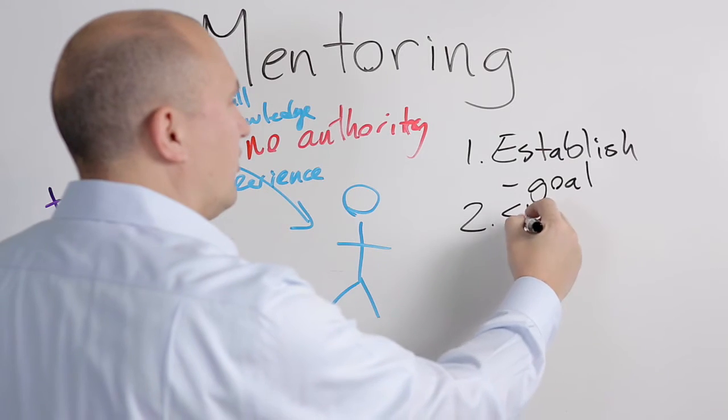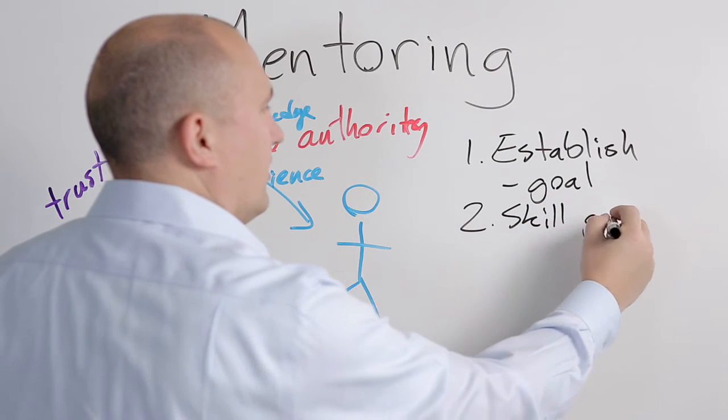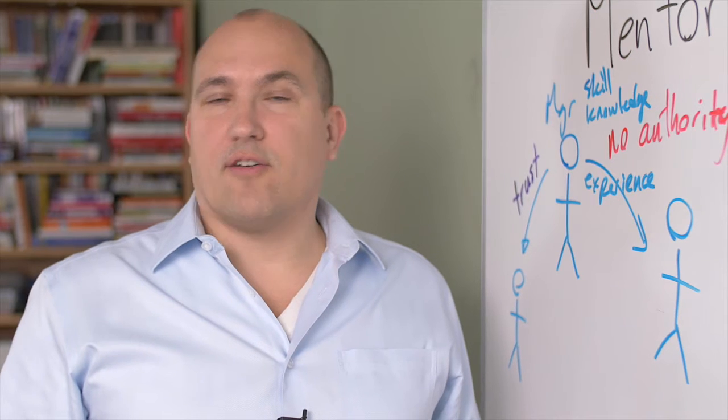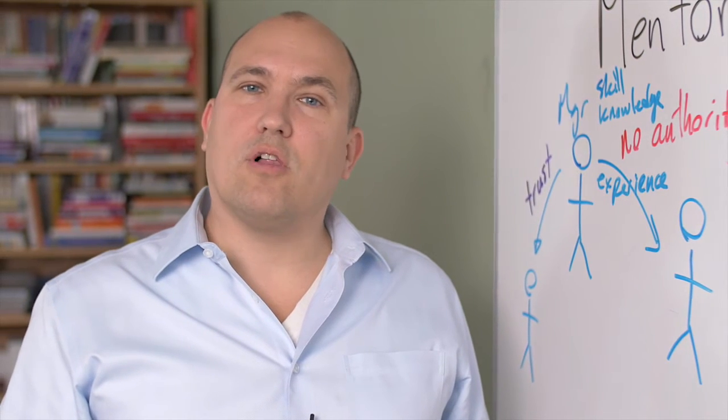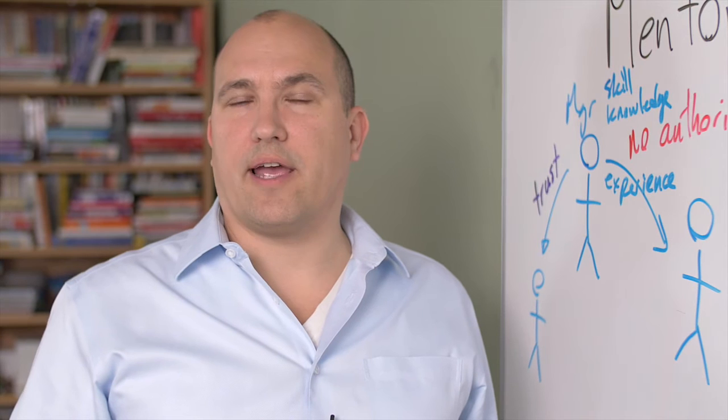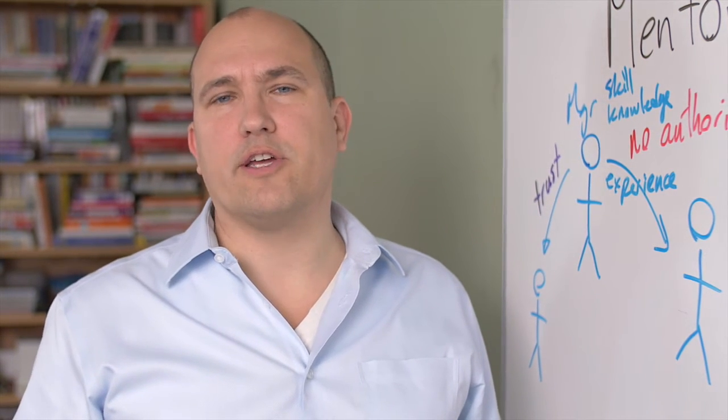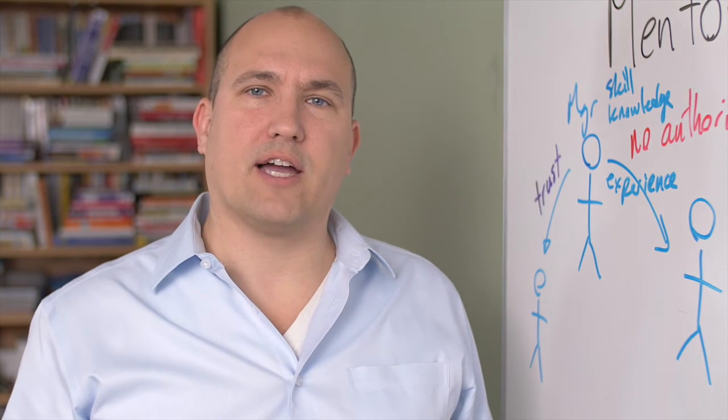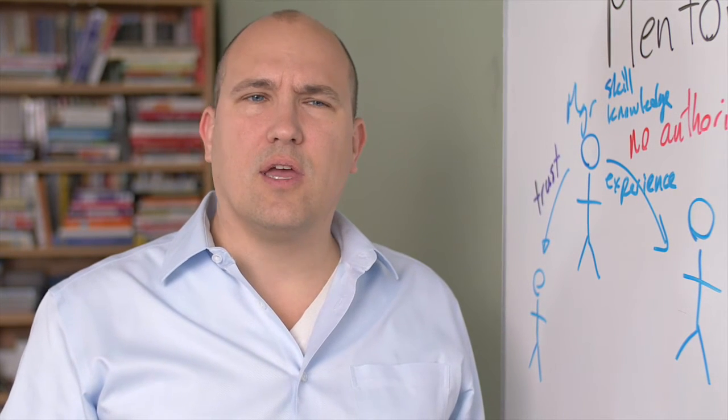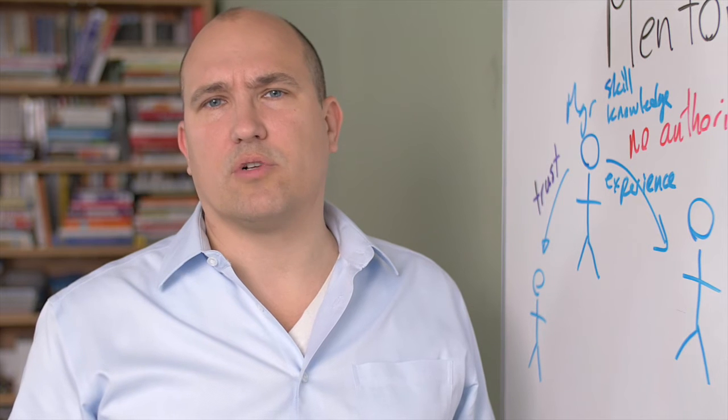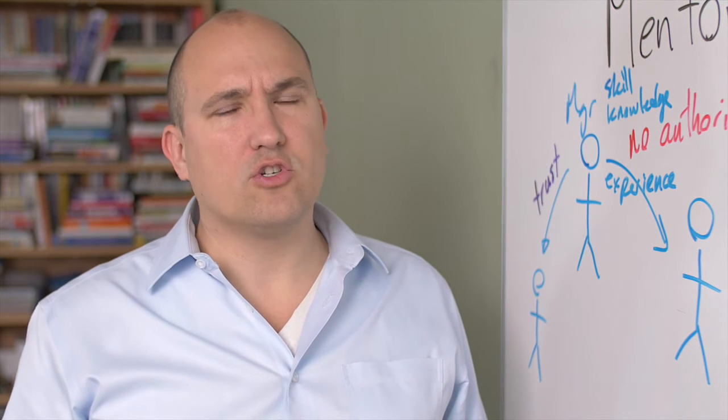The second stage of the mentoring relationship is to acknowledge the skill or knowledge gap. For example, you might acknowledge that you as a manager have a very strong technical background and the person you're mentoring lacks that technical background but needs to gain those skills, kind of like a master and apprentice relationship.